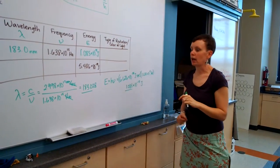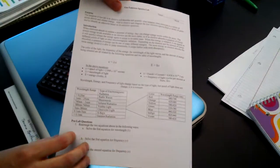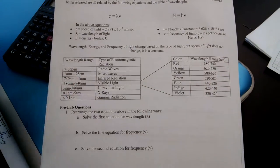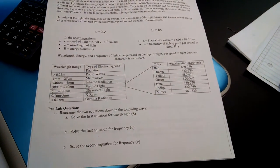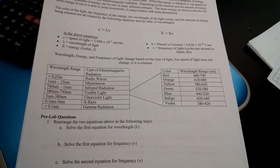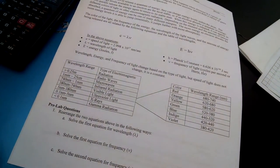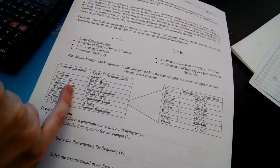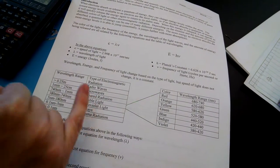To figure out the type of radiation or color of light, you have to go back to the front of your pre-lab and look in this table. All we have to do is find the wavelength for our answer. We had 183.0 nanometers, and that's going to fall into this range, 740 nanometers to 1 millimeter. So it's a little higher than 740, and that's infrared radiation.